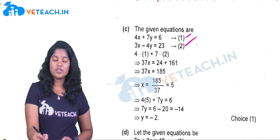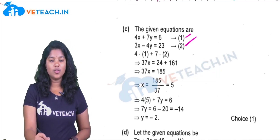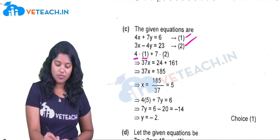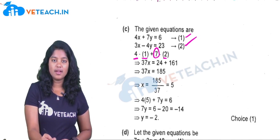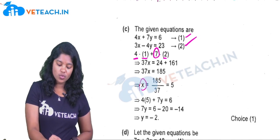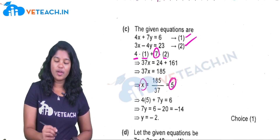Let the given equations be 1 and 2. Multiply the first equation with 4 and the second equation with 7, and add those both. This equation solves to x is equal to 5.